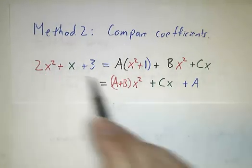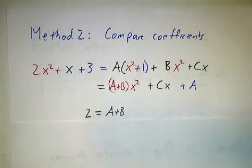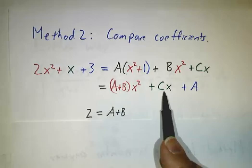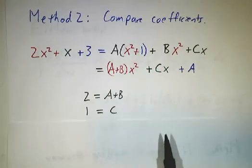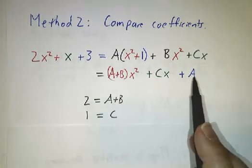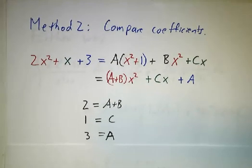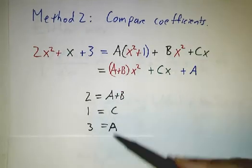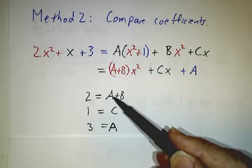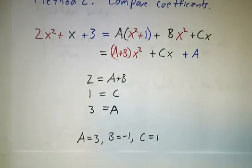And we say, hey, this has 2x squared, and this has a plus bx squared, so we have to have a plus b being 2. This has 1x, and this has cx, so we've got to have 1 equals c. This has a 3 left over, and this has an a left over, so we have to have 3 equals a. And from these three equations where we have a and we have c, and plugging the value of a back into this will give you b, and we get the same answers that we had before.